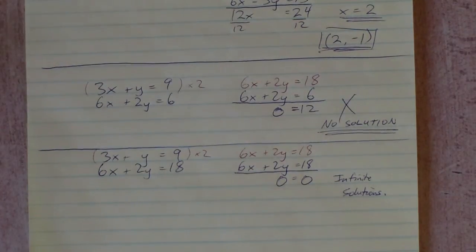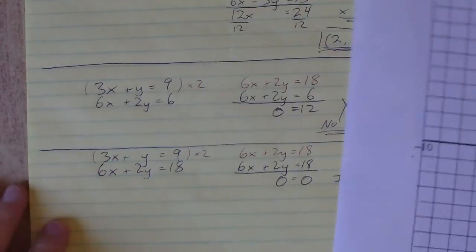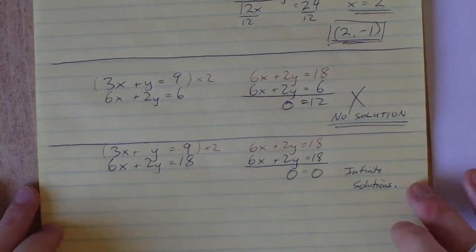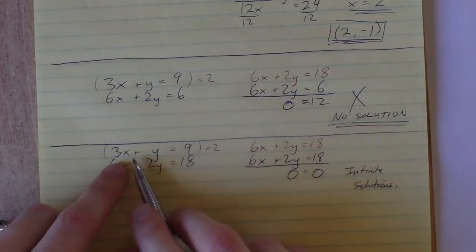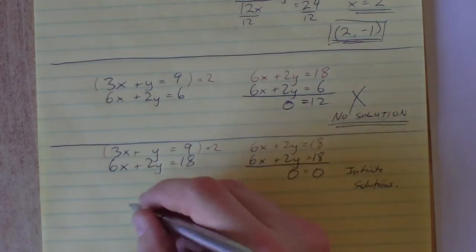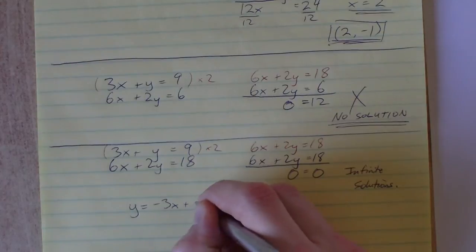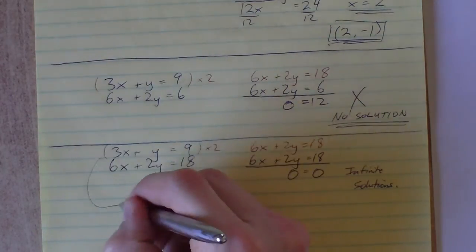To graph them, we don't even need to bother graphing them. We can just look at these equations. If we take the first one, 3x plus y equals 9, and solve that, we get y equals negative 3x plus 9.